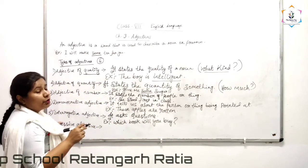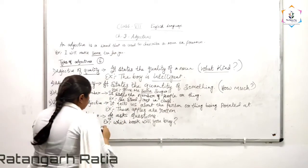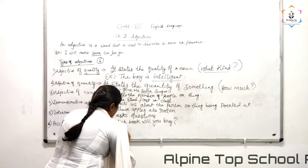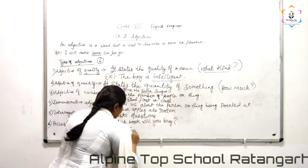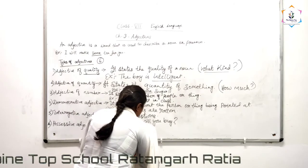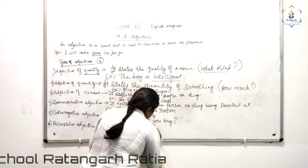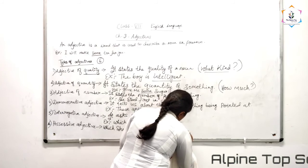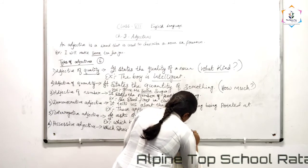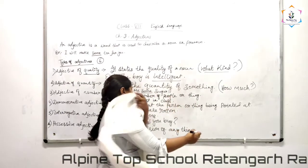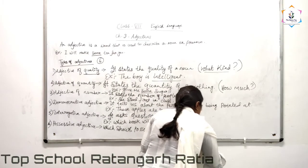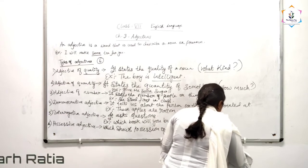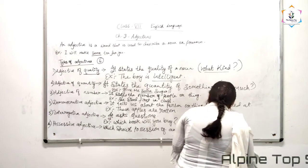Last one is your possessive adjective. Possessive adjective shows possession of anything or person. That means to whom the thing belongs, whoever is the owner of that thing.